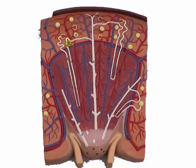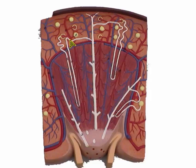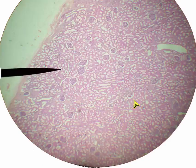And again, here's the distal convoluted tubule. The model is trying to show this simply so it doesn't show you how really convoluted these proximal and distal convoluted tubules are. I think we're ready to move on.